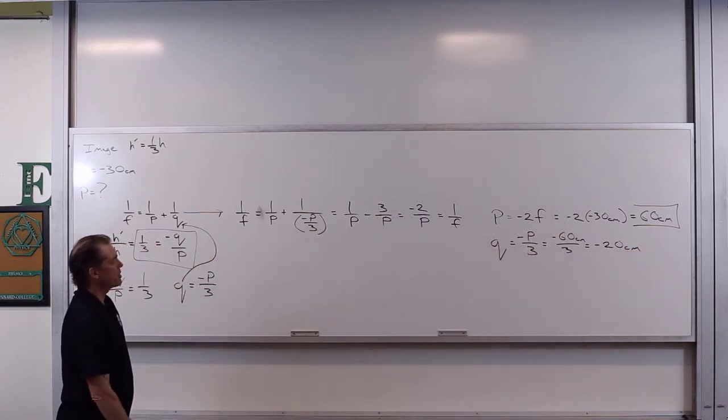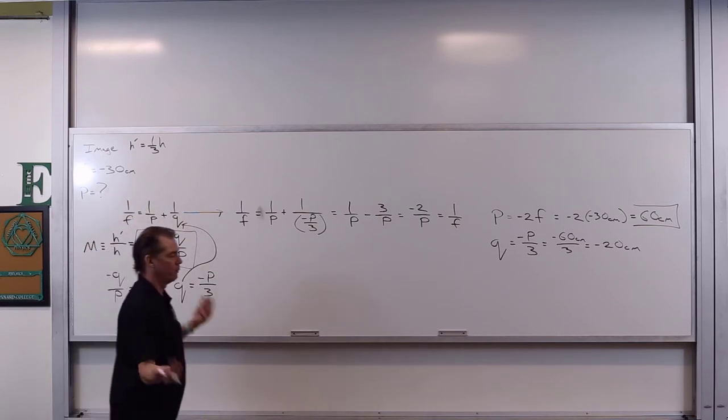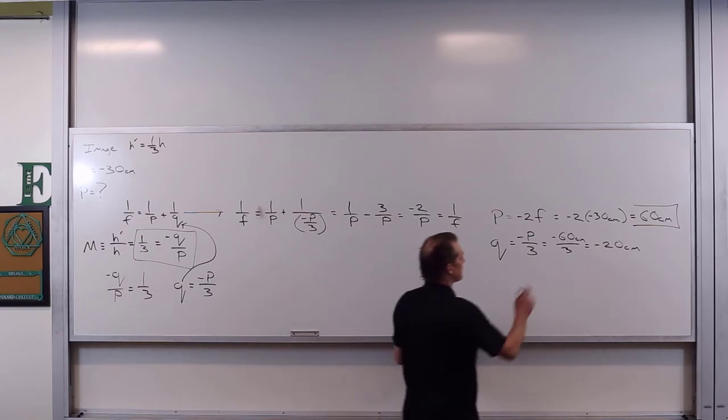All right, we can make sure something. What is q divided by p? Negative q over p, I mean? One-third. That's right. We'd have 20 divided by 60 to do one-third, which is the magnification, which makes sense. All right, so that checks out.